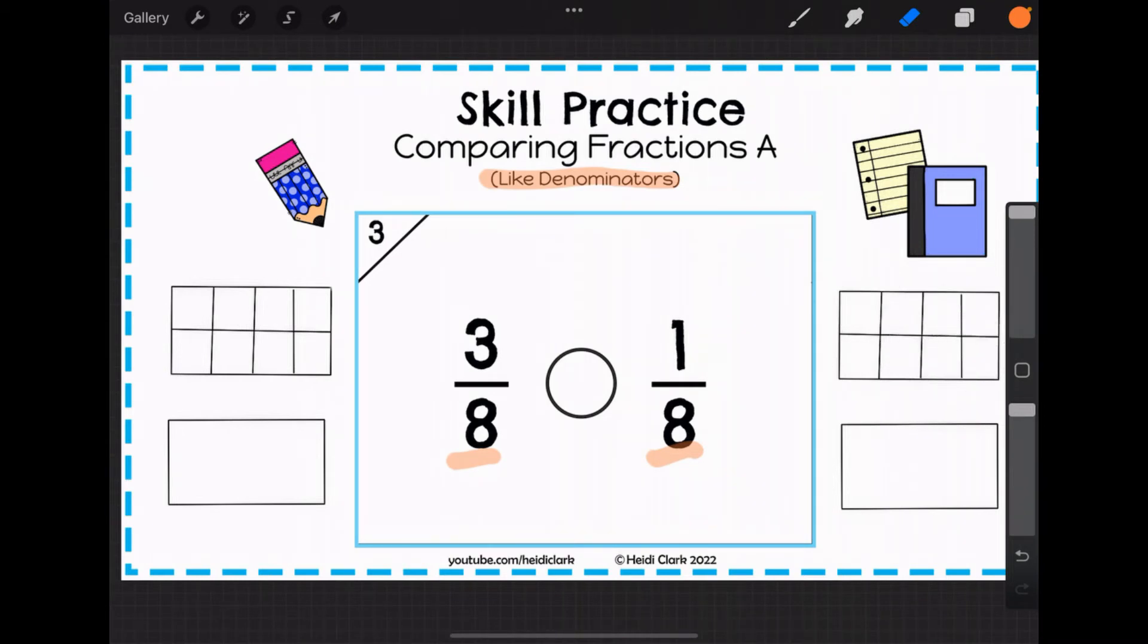Therefore, we have to ask ourselves, okay, well, the pieces are the same on both sides. They're about this big either way. So let's look at those numerators because that's the thing that's actually different about these two fractions.